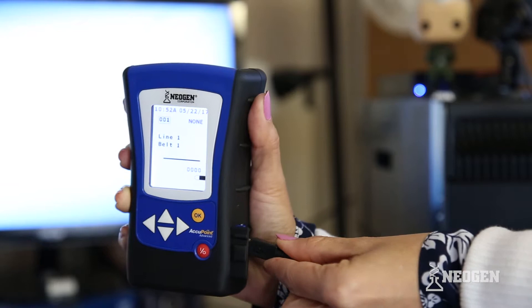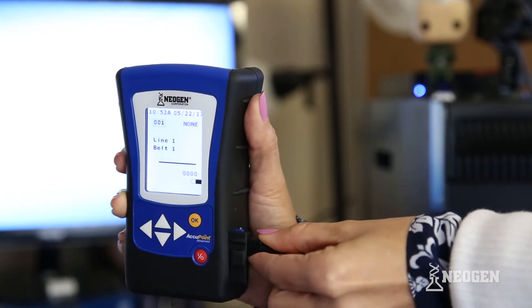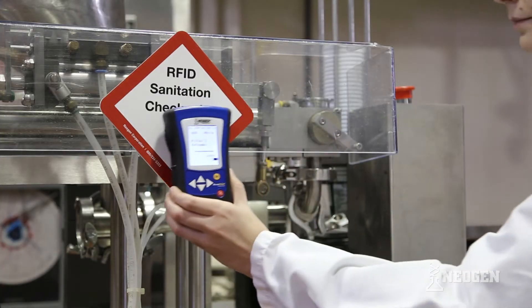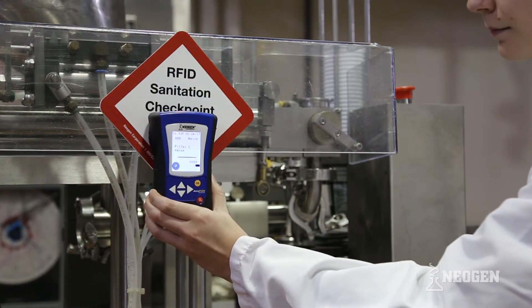With Accupoint Advanced and its software, it's easy to create a testing plan and sync it to the reader. Once synced, swiping the reader over an RFID tag automatically populates the test site information.